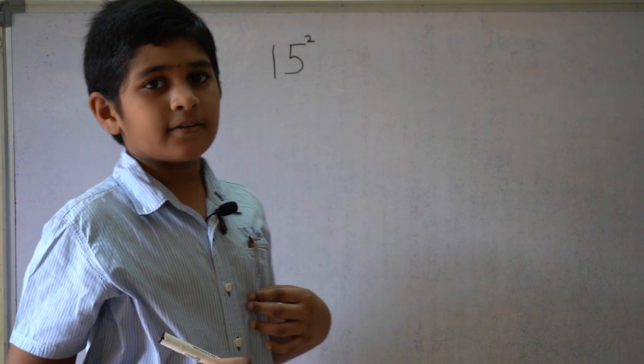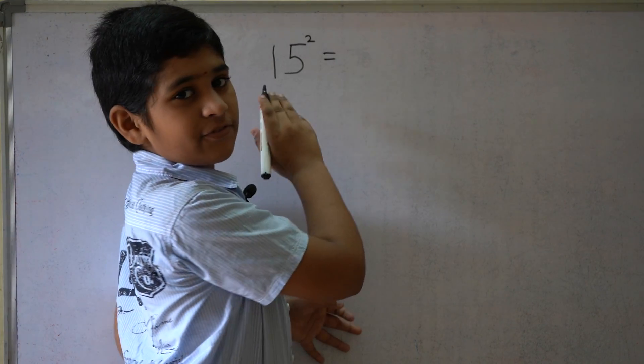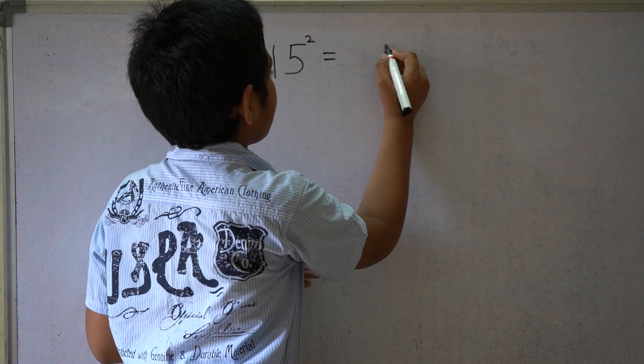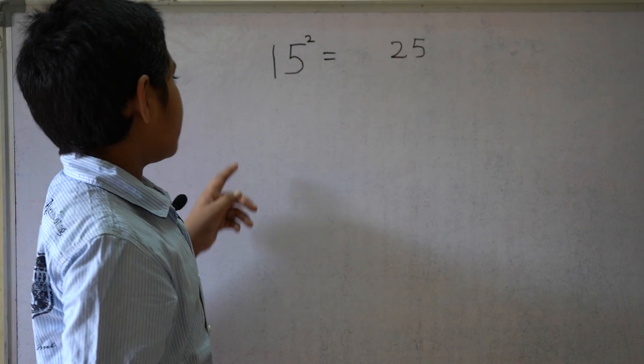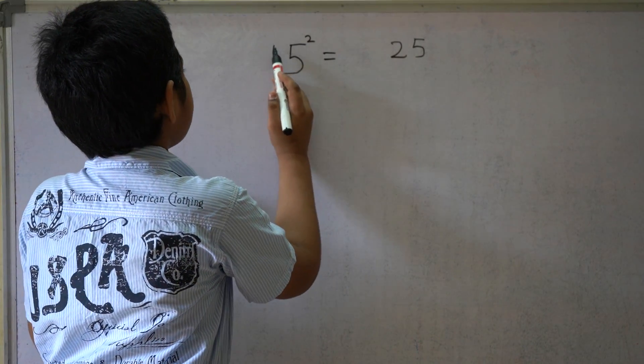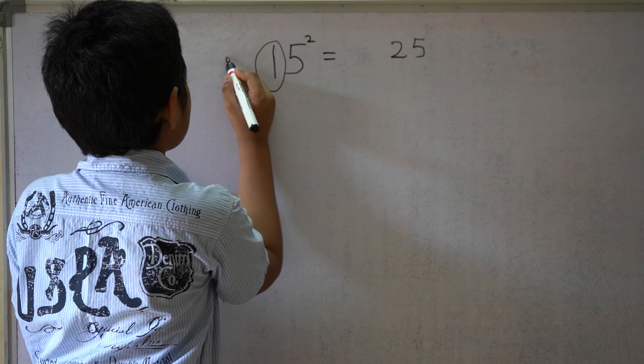15 square. The first one is 5 square, which equals 25. Next, this number is a natural number.